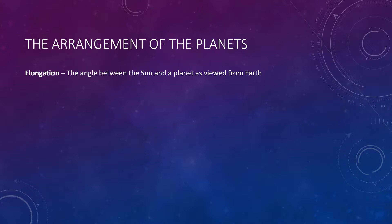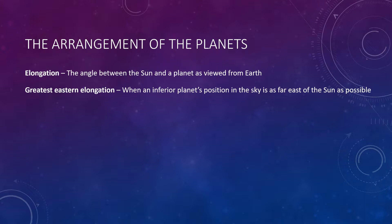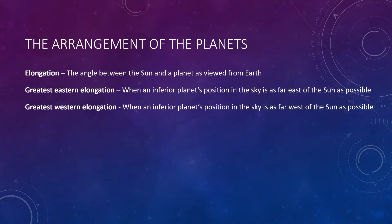When Mercury or Venus is visible after sunset, it is near what we call greatest eastern elongation, where elongation is the angle between the Sun and a planet as viewed from Earth. Greatest eastern elongation is when Mercury or Venus is visible after sunset and its position is as far east of the Sun as possible — it appears above the western horizon after sunset, and we often call it an evening star. At greatest western elongation, Mercury or Venus is as far west of the Sun as possible. It then rises before the Sun, gracing the predawn skies as a morning star in the east.